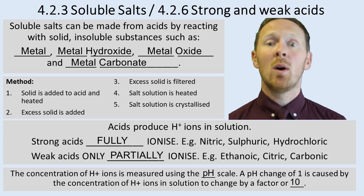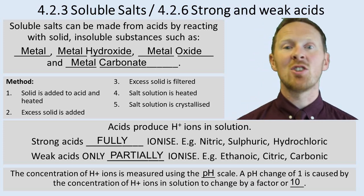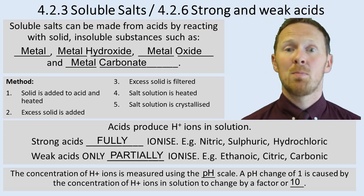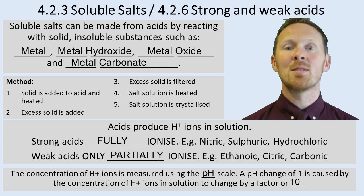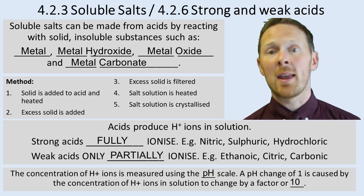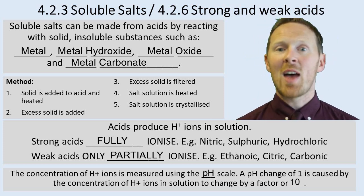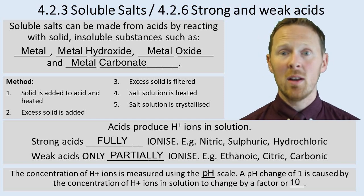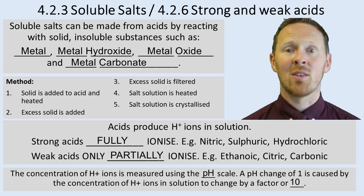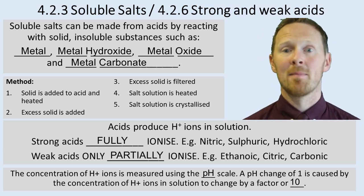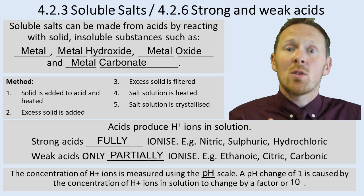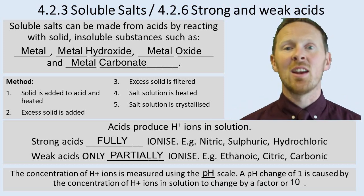pH 1 will have 10 times as many hydrogen ions as a pH of 2. pH 2 will have 10 times more hydrogen ions than a pH of 3. So that means a pH of 1 has 100 times more H+ ions than a pH of 3. That's why as the pH goes down, the concentration of the acid increases.